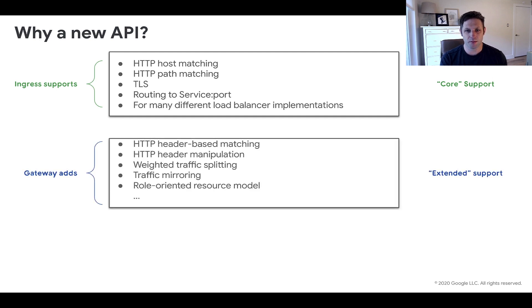So this is where the Gateway API has taken the lessons from ingress and also the service mesh community on up-leveling the Kubernetes native resources that we use to model service networking. The Gateway API adds support for HTTP header matching and manipulation.